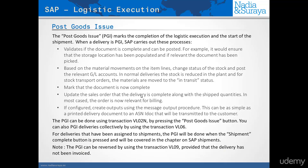Also when you do the PGI, based on the material movements which we will look at in the demo, it changes the status of the stock and if relevant posts GL accounts. For normal deliveries this means that the stock is reduced in the plant, and for stock transport orders the material will be reduced in that plant and moved into an in-transit status.